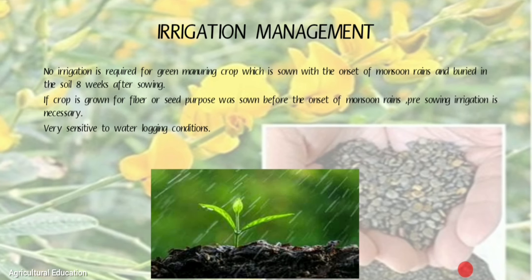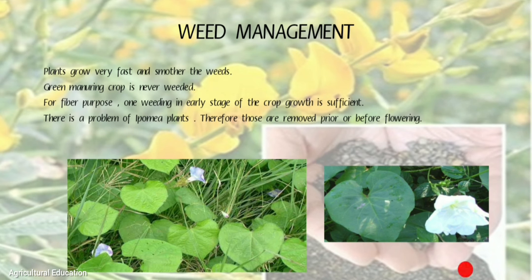Irrigation Management: No irrigation is required for the green manuring crop, which is sown with the onset of monsoon rains and buried in the soil 8 weeks after sowing. If the crop is grown for fiber or seed purpose, or sown before the onset of monsoon rains, pre-sowing irrigation is necessary. Sunhemp is very sensitive to waterlogging conditions.